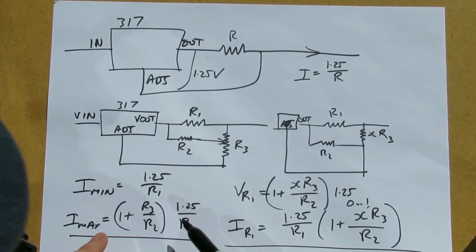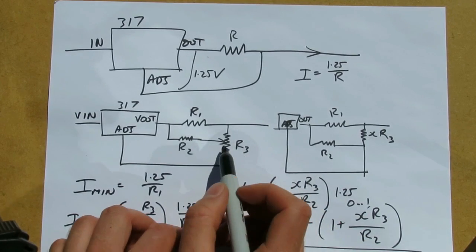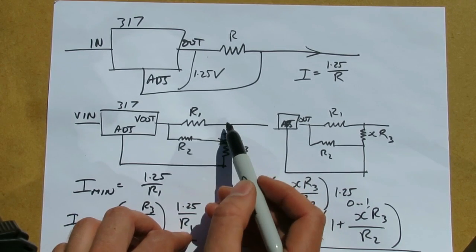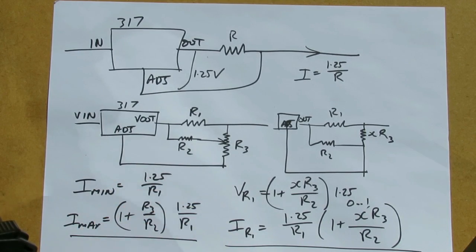This provides a linear adjustment range and also ensures if the wiper loses contact with the potentiometer track that the output is forced low. This is a feature of the grounded wiper configuration.